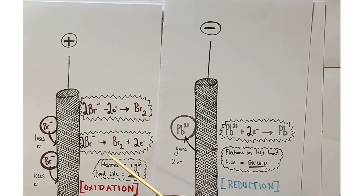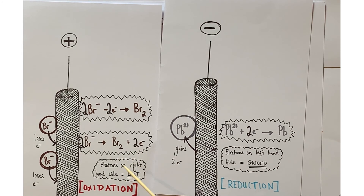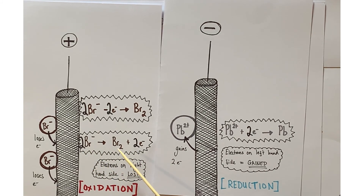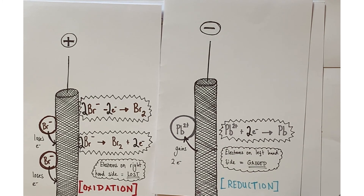There is an alternative but equivalent way to write this half-equation: 2Br⁻ → Br₂ + 2e⁻. If electrons appear on the right-hand side of the half-equation, it shows they were lost from the bromide ions to make bromine molecules. Both forms tell the same story. Turning your half-equation into the story of what happened at the electrode helps build comprehension and understanding of how half-equations work.